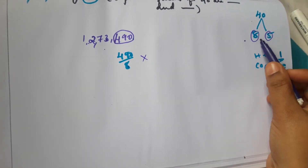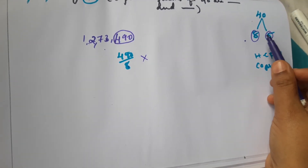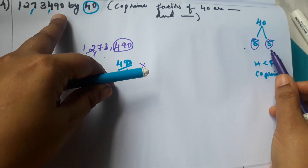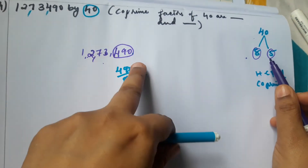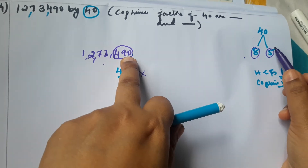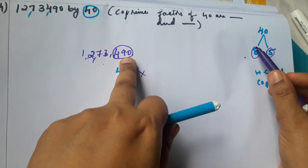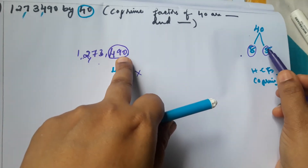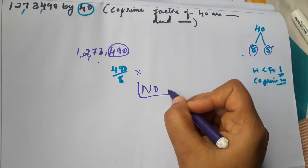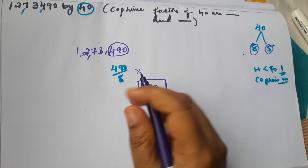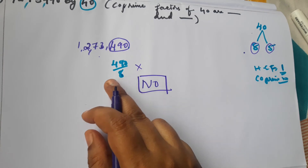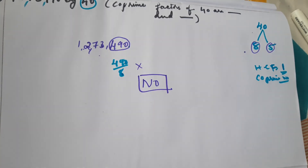Since 490 is not divisible by 8, the answer for divisibility by 8 is No. Both co-prime factors must divide the number. The number is divisible by 5 (last digit is 0), but it is not divisible by 8. So the answer is No — 12,73,490 is not perfectly divisible by 40.